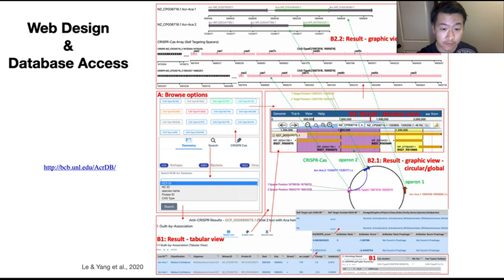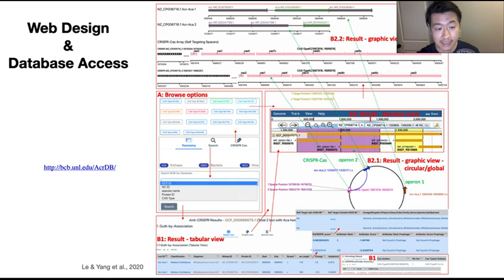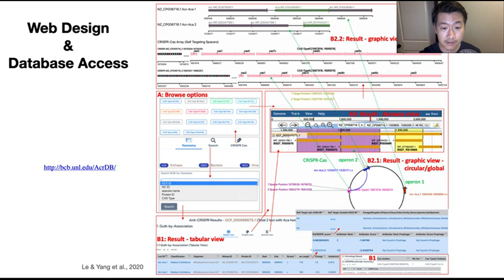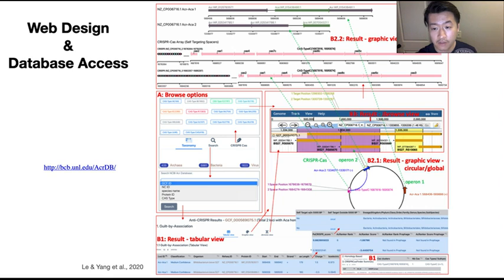We also built a web server for ACR-DB. Here are a couple of screenshots: in panel A you can browse by different options, and in panel B there are tables containing a variety of information on the anti-CRISPR loci. There is also a circular representation of the genome the locus is in, and a linear representation of the locus — all to give the user a better understanding of the data.